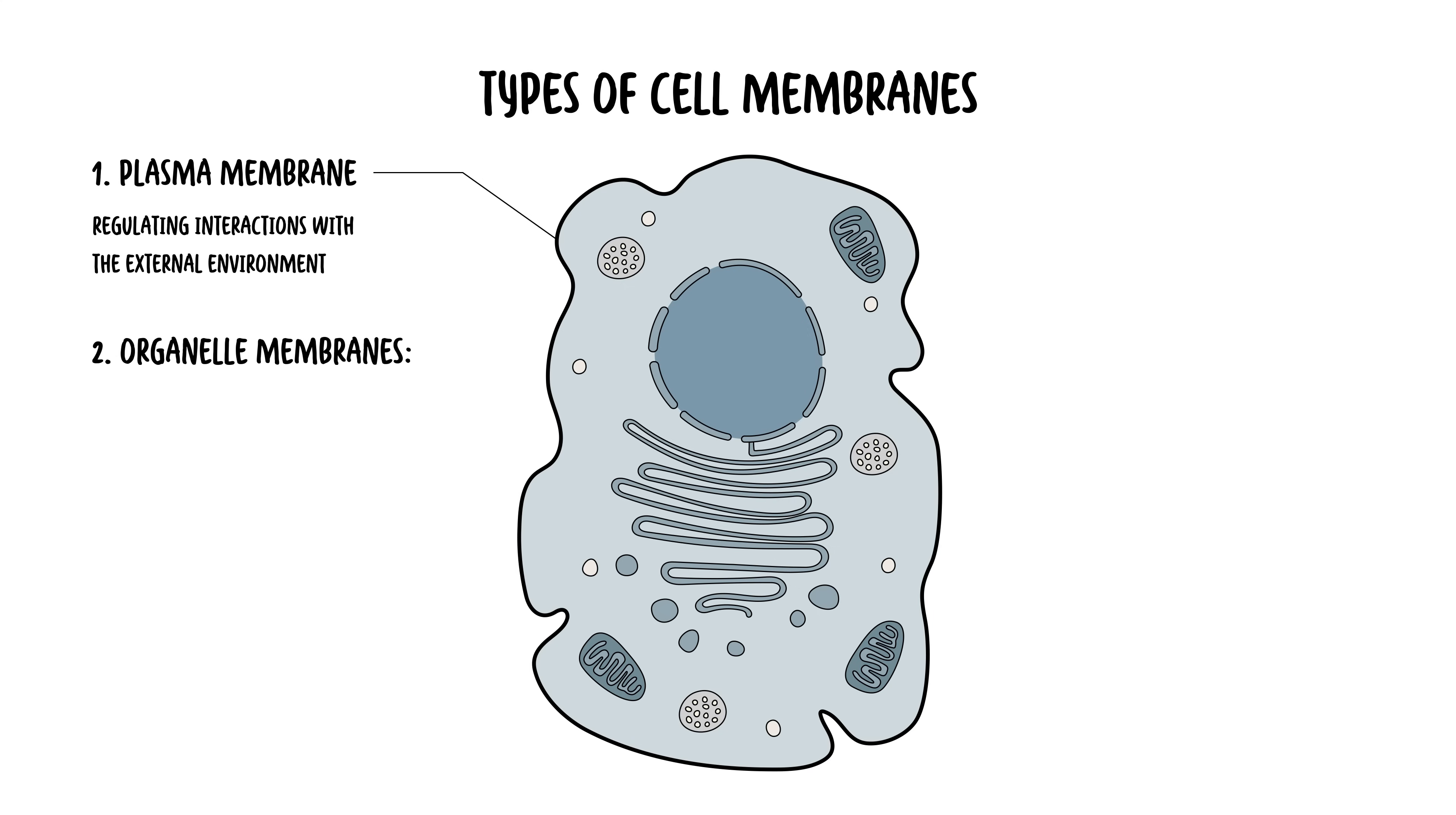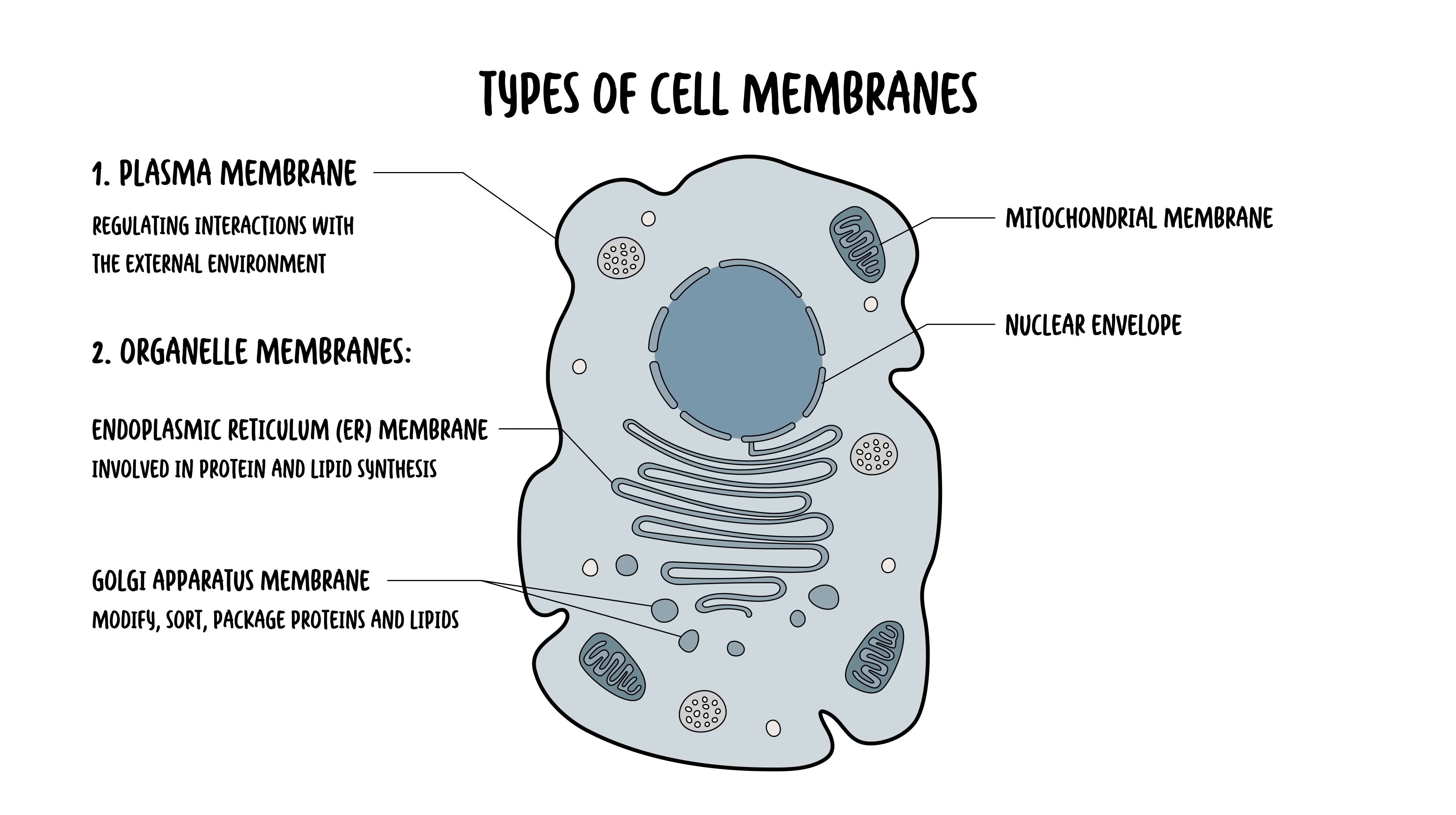Then you have organelle membranes, including the nuclear envelope, a double membrane surrounding the nucleus containing nuclear pores for the exchange of materials between the nucleus and cytoplasm. You have the endoplasmic reticulum membrane, a network of membranes involved in protein and lipid synthesis, the Golgi apparatus membrane, membranes forming the system that modifies, sorts and packages proteins and lipids. You have the mitochondrial membrane, the double membrane with an outer and highly folded inner membrane housing the machinery for ATP production, the power station of the cell. Then you have the lysosomal membrane and the peroxisomal membrane, which essentially are vesicles containing breakdown products or enzymes.